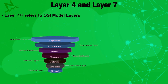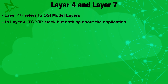Certain things happen at layer 4 and the rest happen at layer 7, so the visibility in both layers is different. Layer 4 is about TCP/IP and layer 7 is about the application layer — this is where your actual application will be.